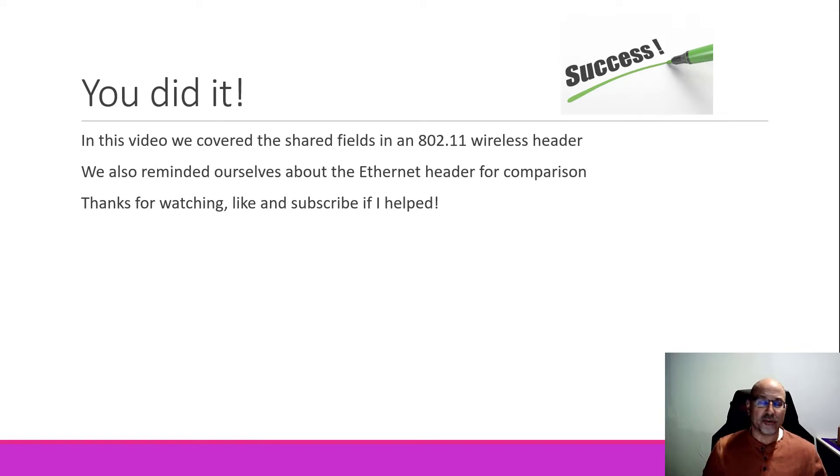Well, you did it. You've taken a look at the internals of your first couple of wireless frames. In this particular video, we covered all of the fields that are part of the normal 802.11 wireless header. We also reminded ourselves what an Ethernet header looks like, just so we can compare the two. Let's pat ourselves on the back. Thanks for watching. Thanks for listening. Like and subscribe if I helped. And may those wireless packets always reach their destinations. Although, I guess right now we're really talking about frames.